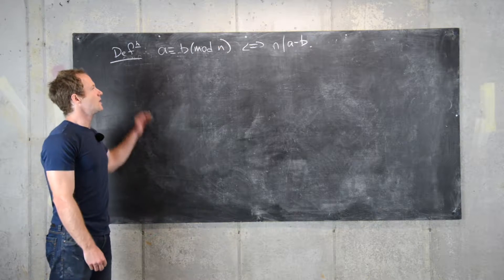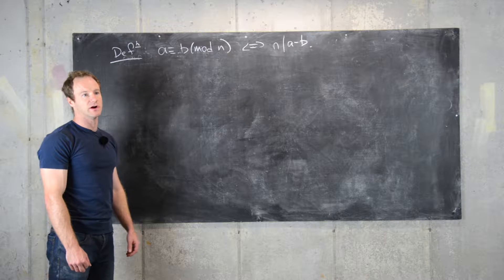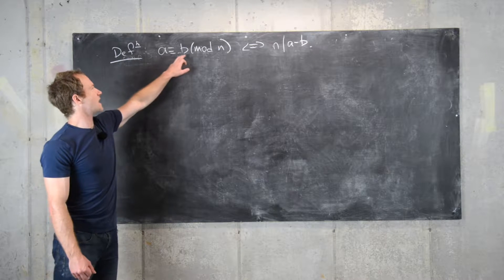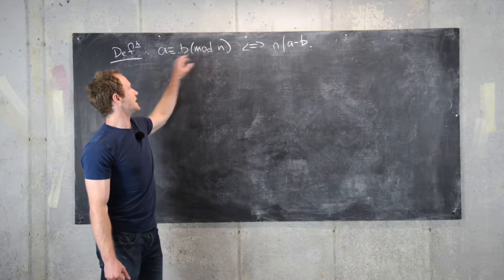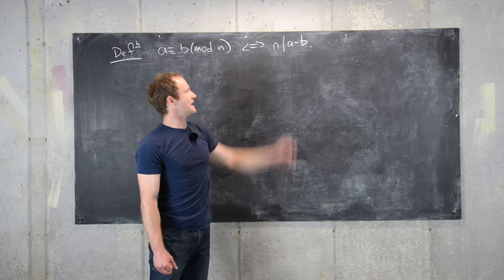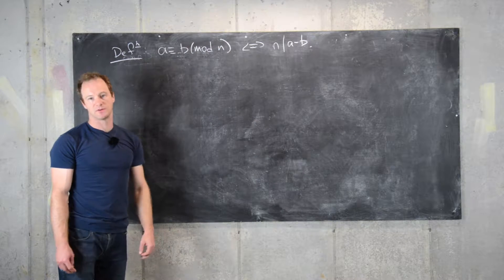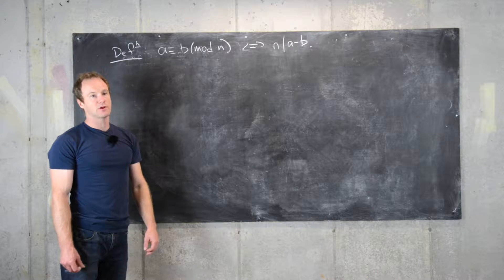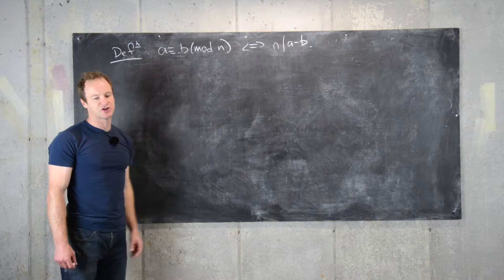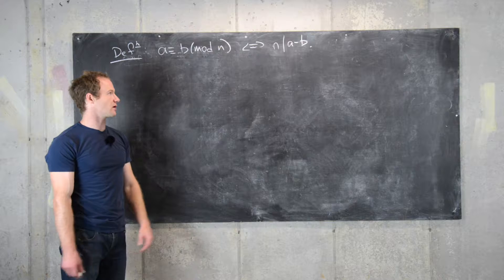In a previous video we defined what it meant for two numbers to be equivalent modulo a natural number n. We say that a is congruent to b modulo n, written as follows, and that is defined by n dividing a minus b — in other words, a minus b is a multiple of n. We want to look at one more definition tied to any equivalence relation, and we showed that this was an equivalence relation in a previous video.